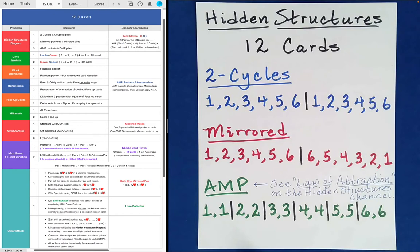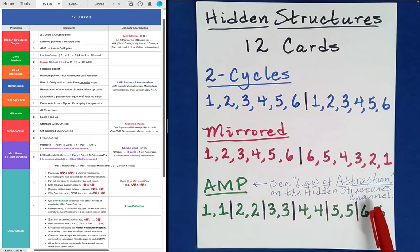So here's an overview of the three structure types that we have been studying in this boot camp series. The first one, of course, is a two-cycle structure. And it would have this form here. This is a mirrored structure, and it would have that form. And an AMP structure would look like this. Now I want to point out that if you go to the Hidden Structures channel, you'll find a demonstration called Law of Attraction. And it uses a 12-card packet and the principles that we'll be talking about today.